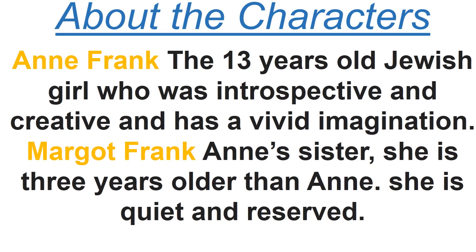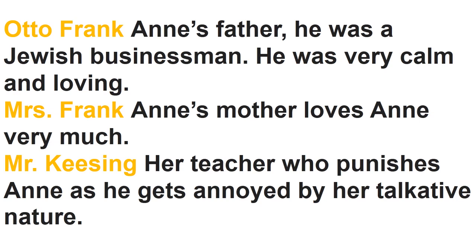The main characters of this chapter are: first, Anne Frank herself, a 13-year-old Jewish girl who was introspective — meaning self-examining — and creative, with a vivid imagination. Margot Frank, Anne's sister, is three years older than Anne and is quiet and reserved. Mr. Frank was a Jewish man who was very calm and loving. Mrs. Frank, Anne's mother, loves Anne very much. Mr. Keesing is her teacher who punishes Anne as he gets annoyed by her talkative nature.